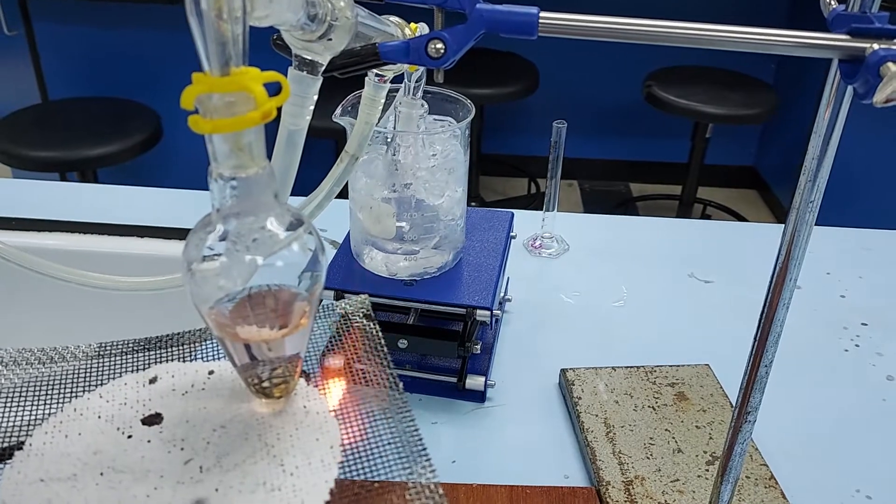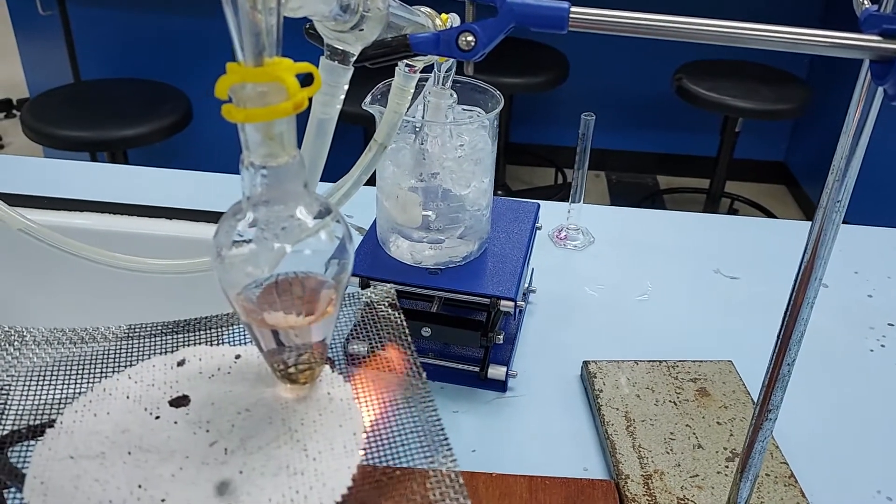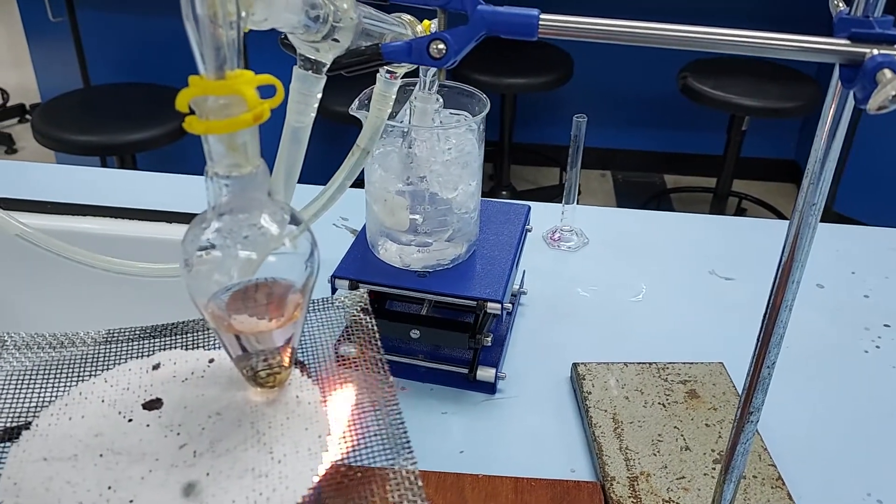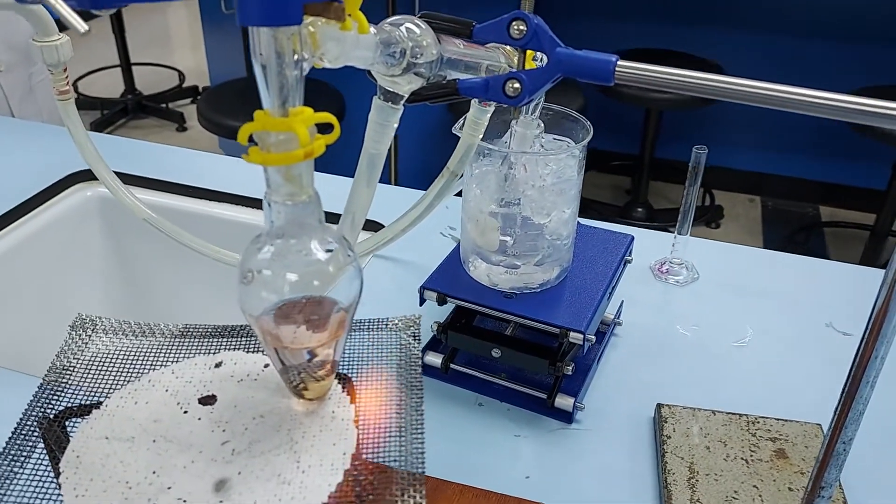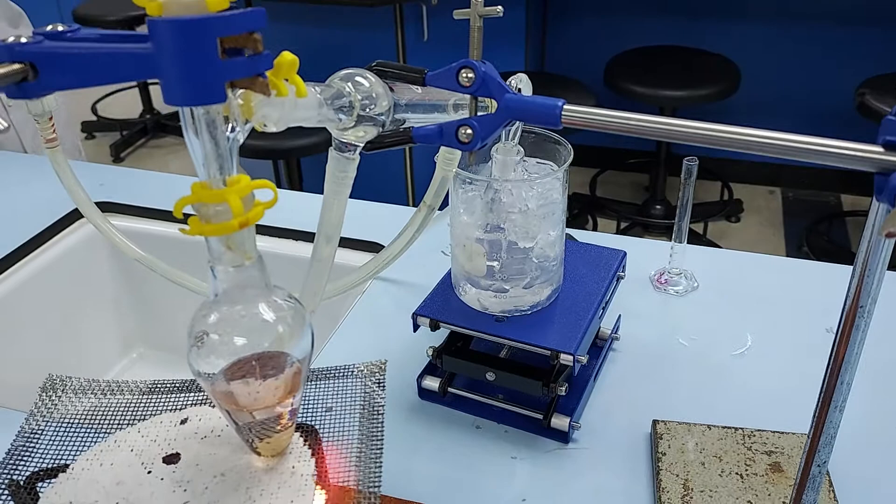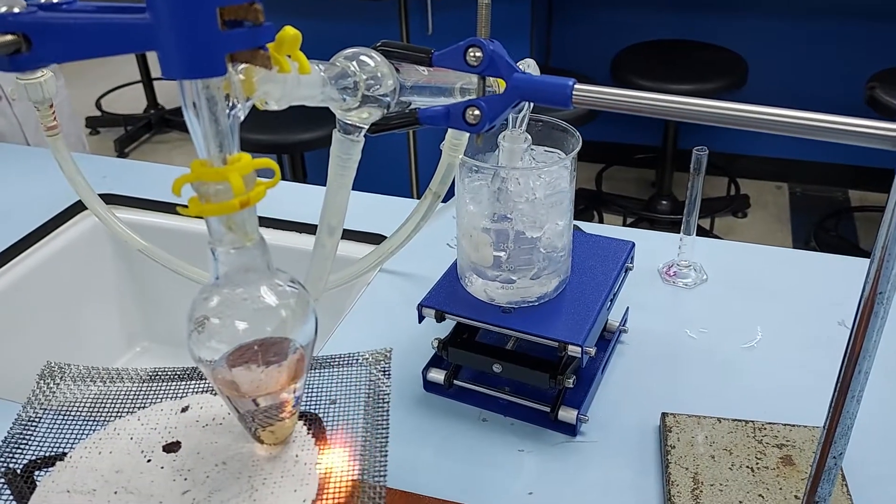We don't want that to happen, we want to make an aldehyde. Aldehydes are very volatile so they've got a low boiling point. This should evaporate and then condense in the condenser and go straight into our receiving flask.